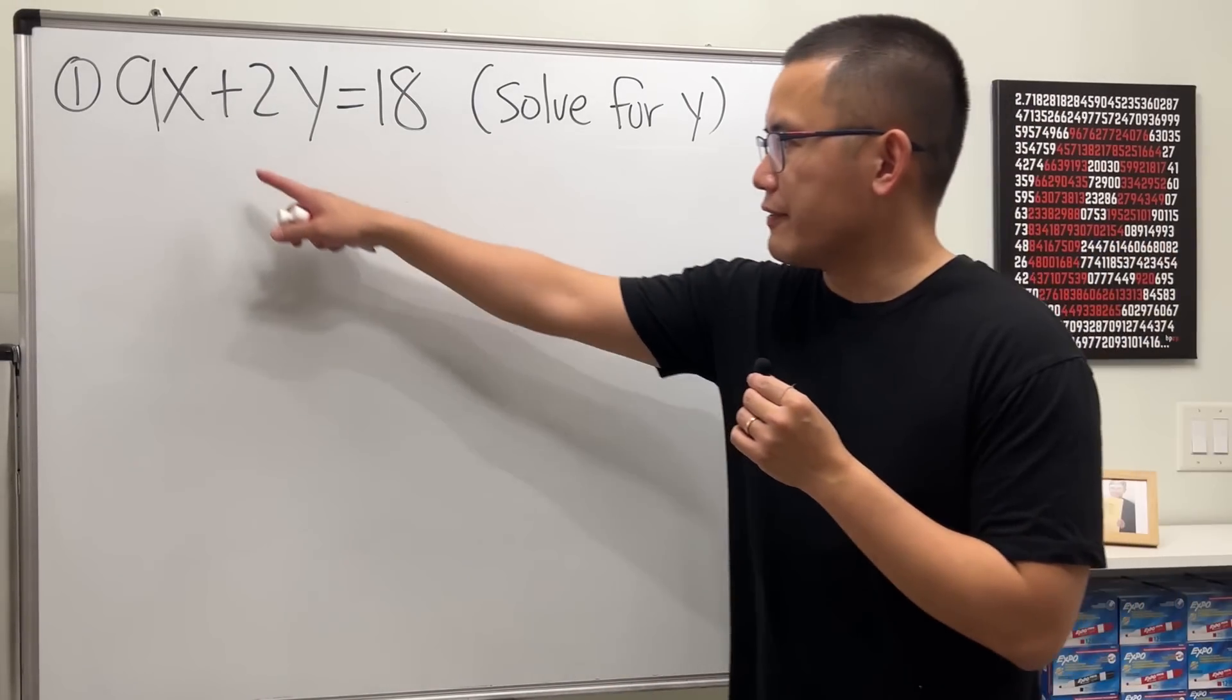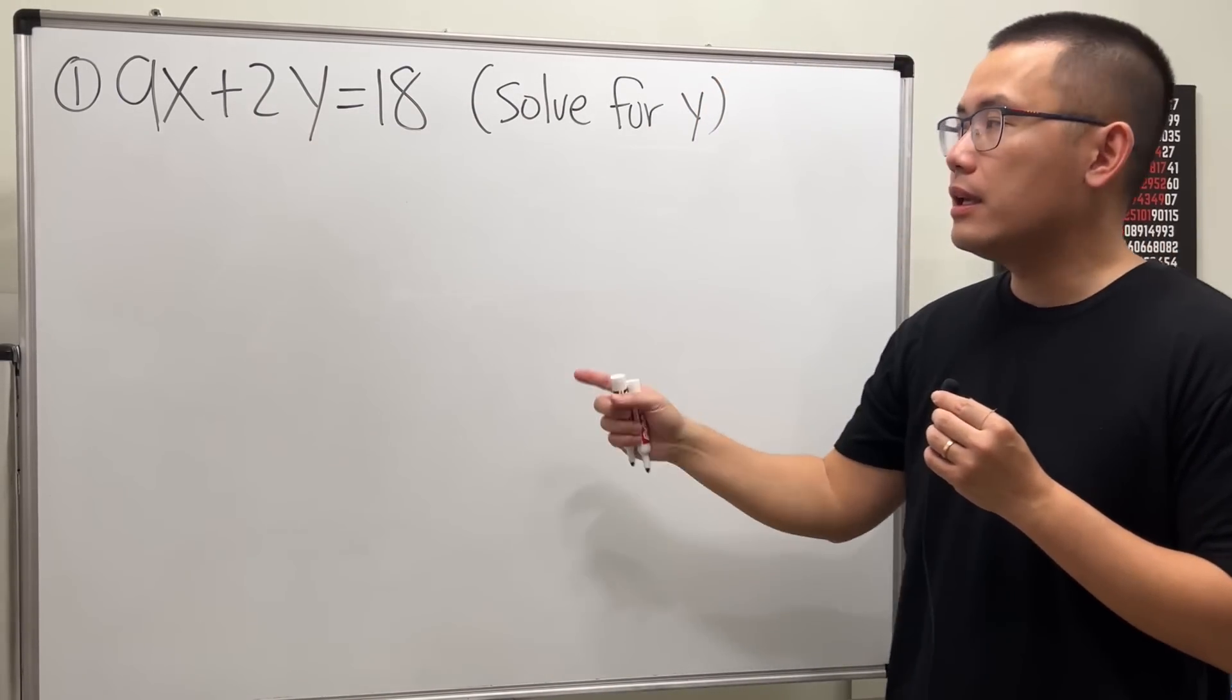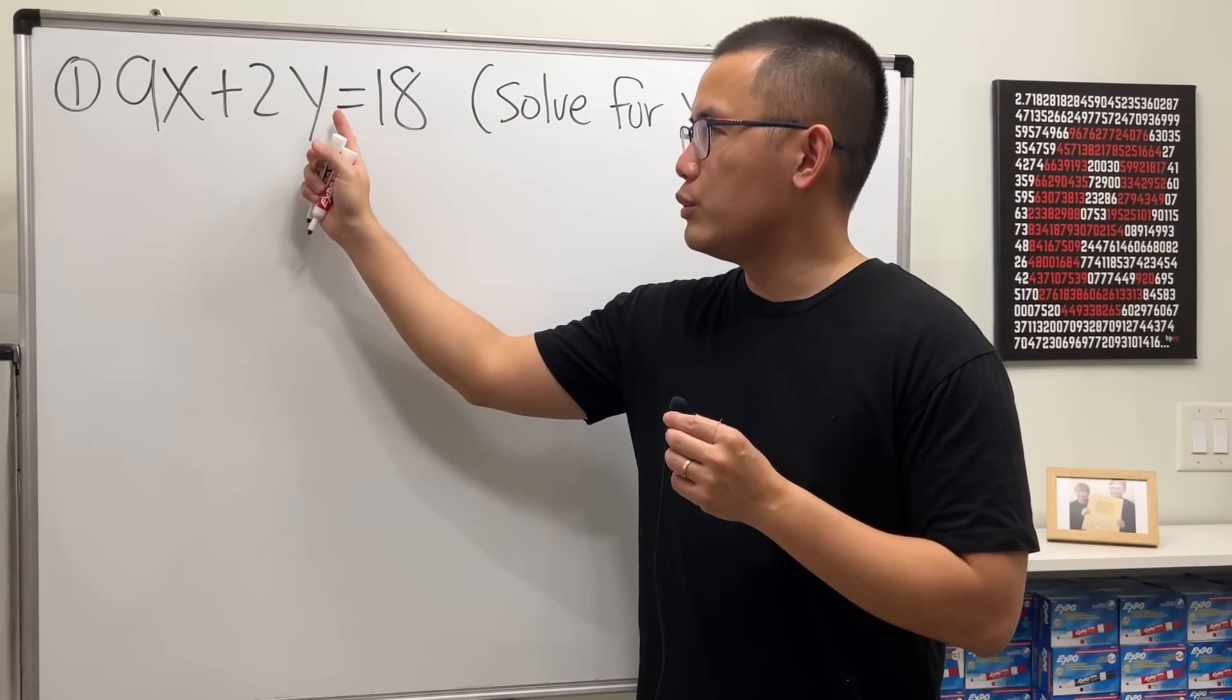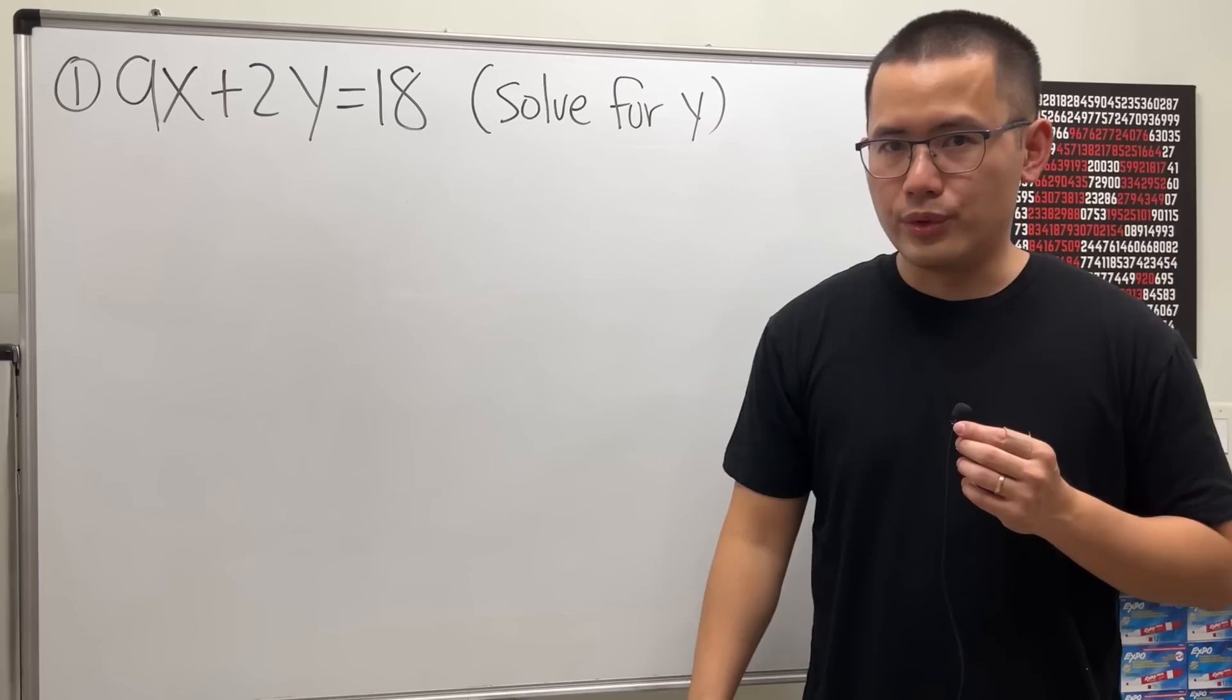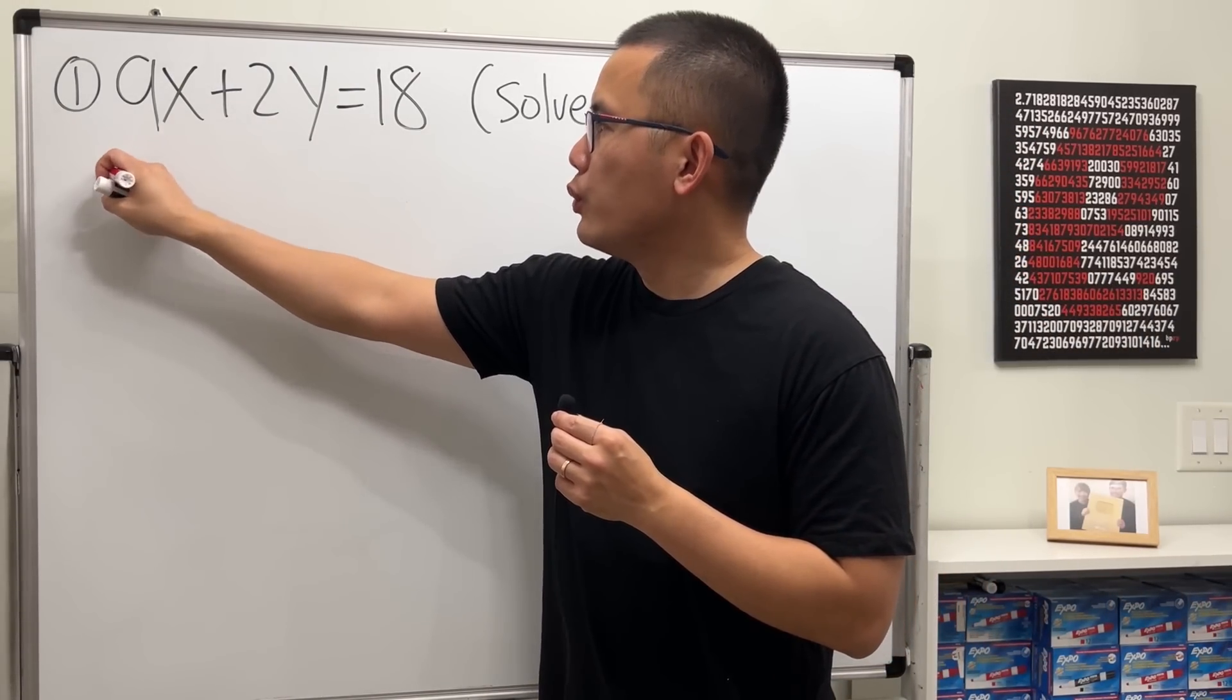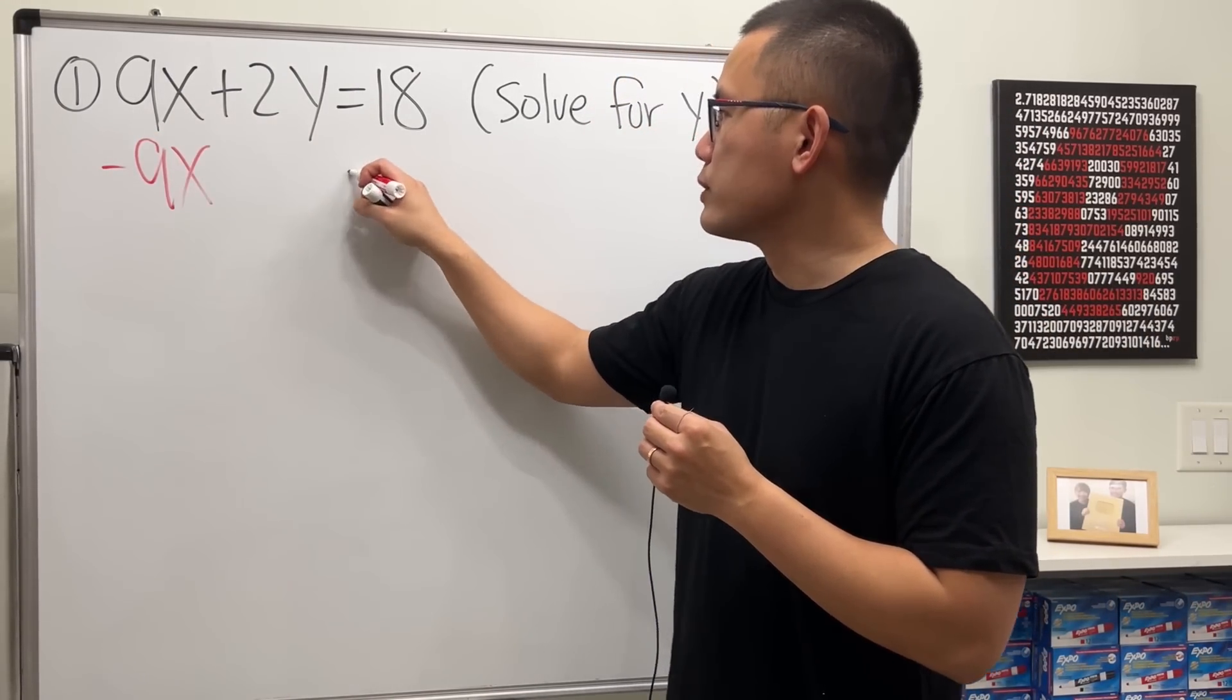For the first one, we have 9x plus 2y equals 18, and we are going to solve for y. So have a look. Here is the y. We want to get this by itself. And this is what you want to do. Let's get rid of the 9x first, and to do so, we subtract 9x to both sides.